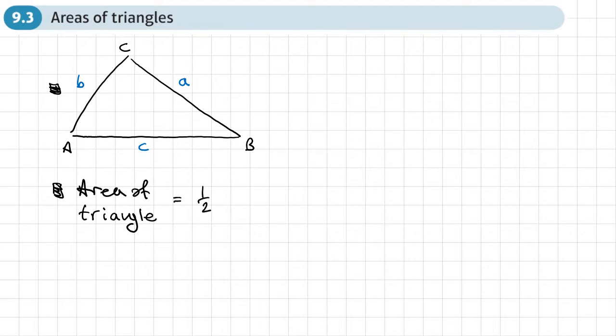And that is half times side A times side B times the sine of angle C. So let's have a look in the triangle and see where that actually is, and let's highlight it.